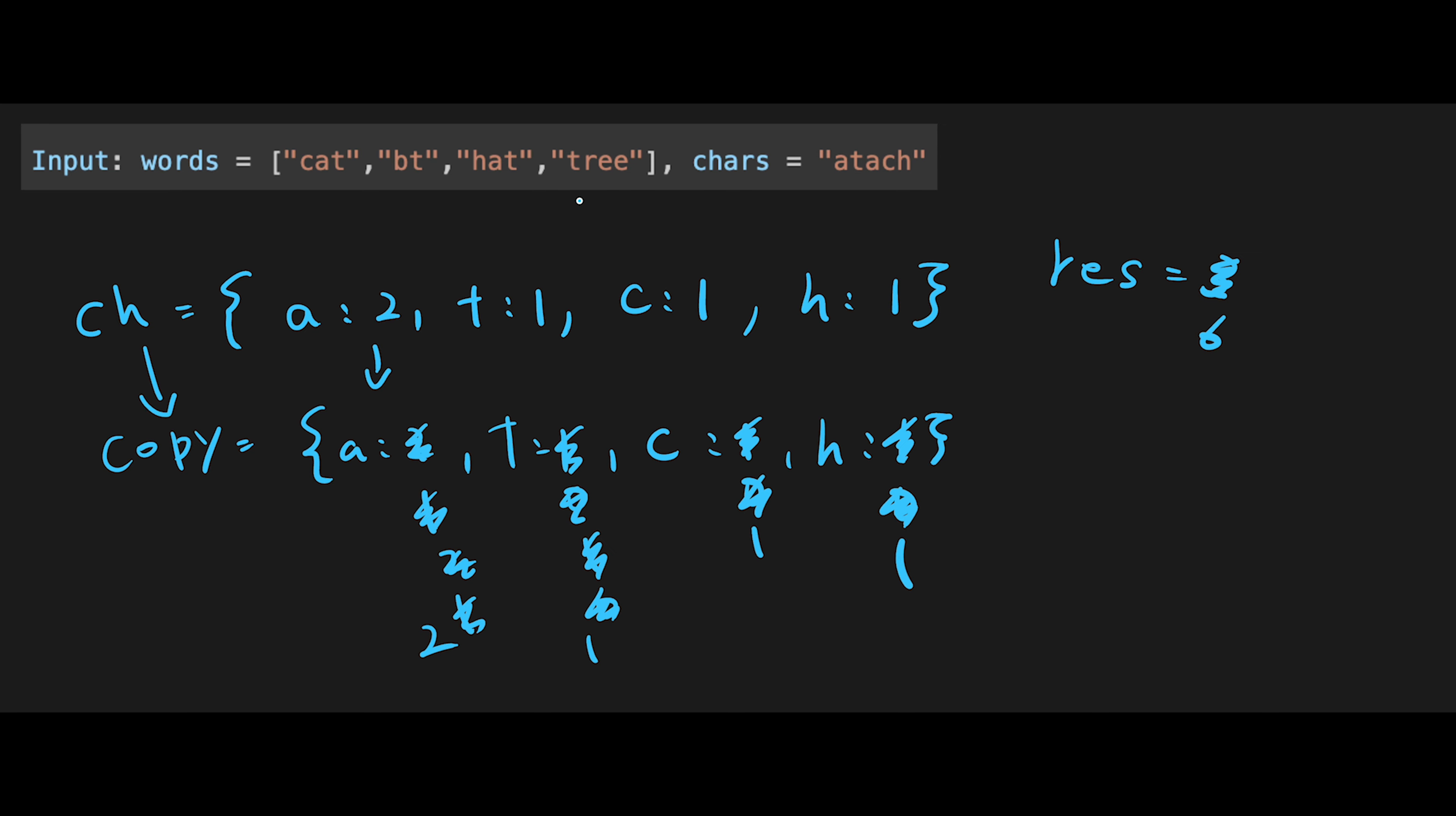And then we have 1t, so 0. And r, there is no r, right? So then we cannot create tree. That's why in this case output is 6.